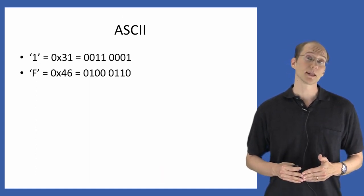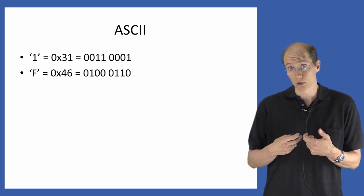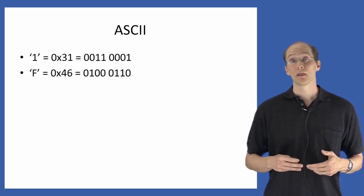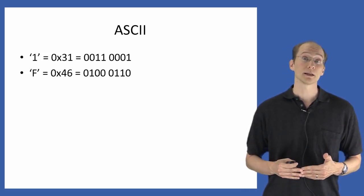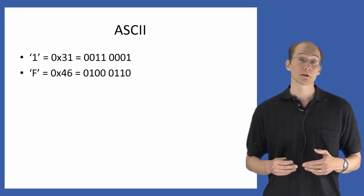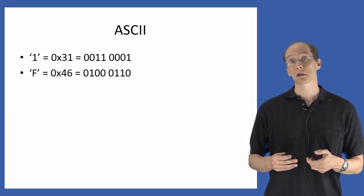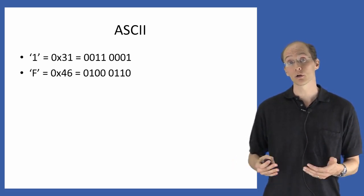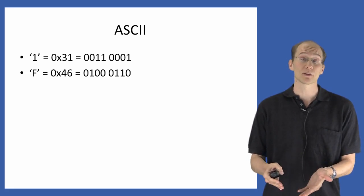So, just to walk through an example, if we look at the character 1, which is the numeral one, that has value hex 31 in the ASCII representation. So that means that if you have a file and somewhere in that file you have the character one,